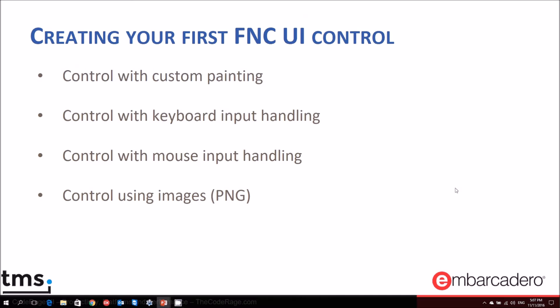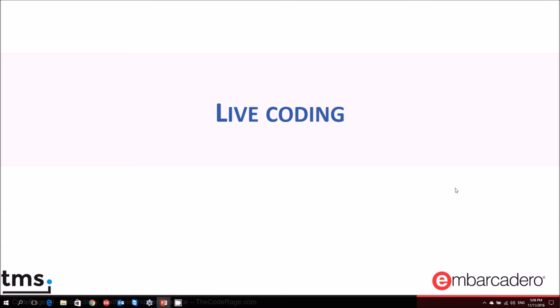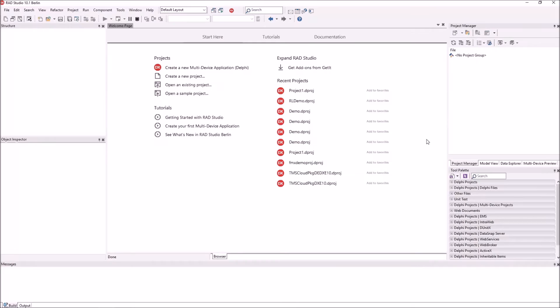With this information, we are ready to create a sample FNC-based UI control that will work in both VCL and FMX. For this example, we will build a control with custom painting that handles keyboard and mouse inputs. To demonstrate image handling for both frameworks, the control will also use PNG images.